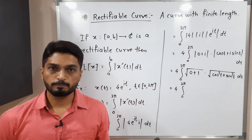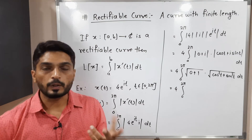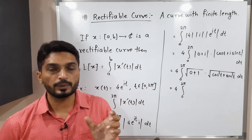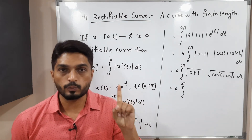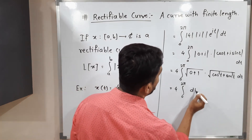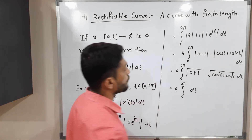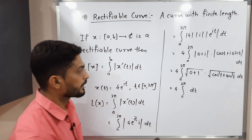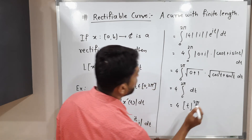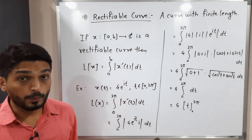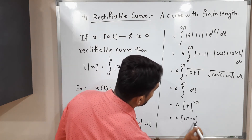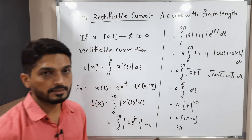So we have 4 · ∫ from 0 to 2π of √(0+1) · √(cos²t + sin²t) dt. The first square root gives 1. By the standard identity, cos²t + sin²t = 1, so that square root is also 1. The integral reduces to 4 · ∫ from 0 to 2π dt = 4 · [t] from 0 to 2π = 4(2π − 0) = 8π.